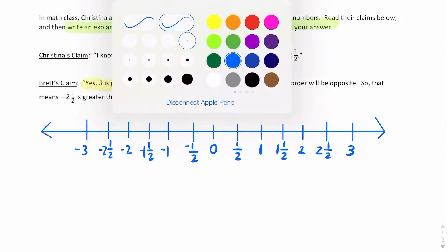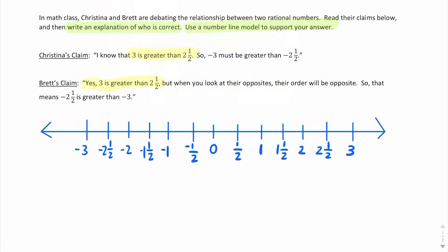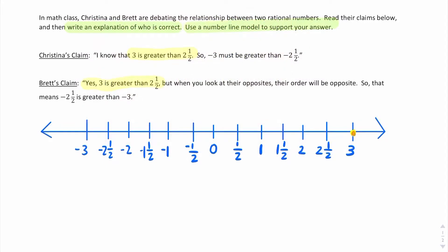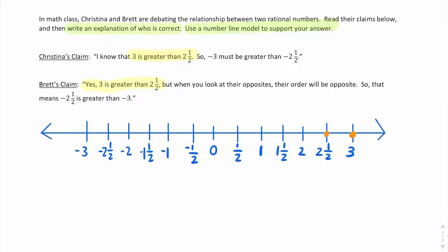So I'm going to go ahead and show that information on the number line. Remember, on the number line, numbers that are farther to the right are greater. So 3 is greater than 2 and 1 half.